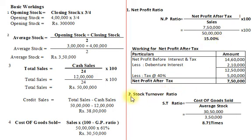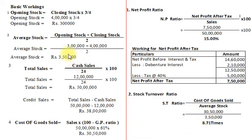Second ratio: Stock Turnover Ratio. Formula: cost of goods sold ÷ average stock. Cost of goods sold Rs. 30,50,000 divided by average stock Rs. 3,50,000 = Stock Turnover Ratio 8.71 times.